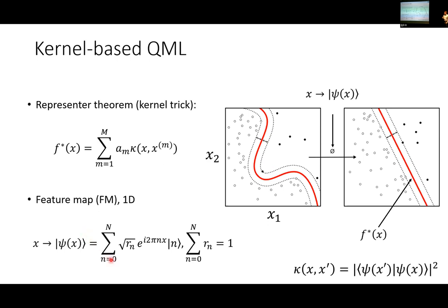One idea to map a one-dimensional problem to a quantum state is to encode it in a phase. The kernel kappa(x, x') can be expressed by this f* function that can be found efficiently on a classical computer. You just need to know the values of the kernel for two points and need to be able to calculate this efficiently.